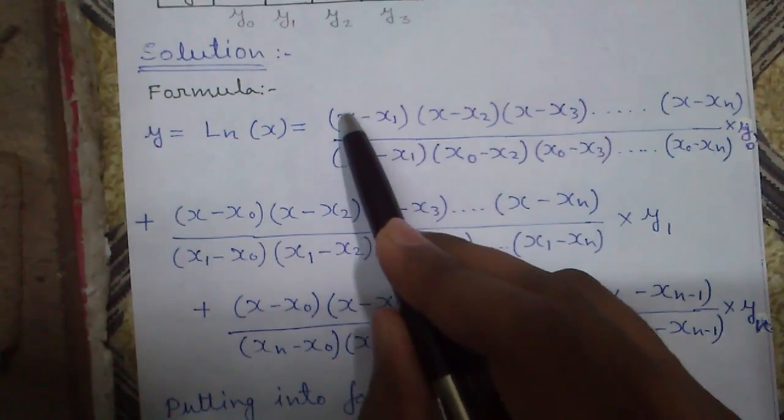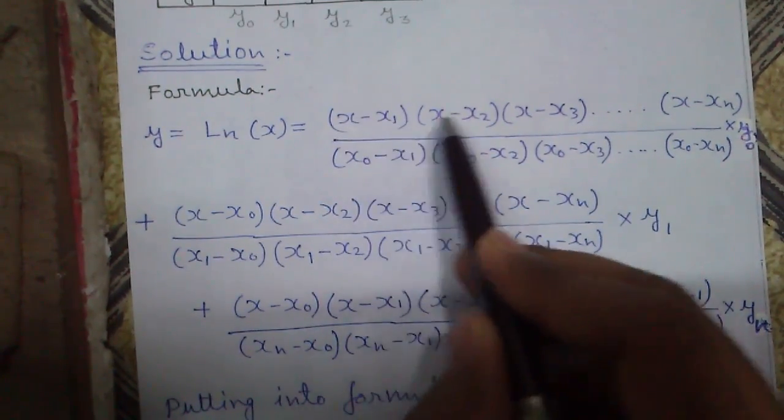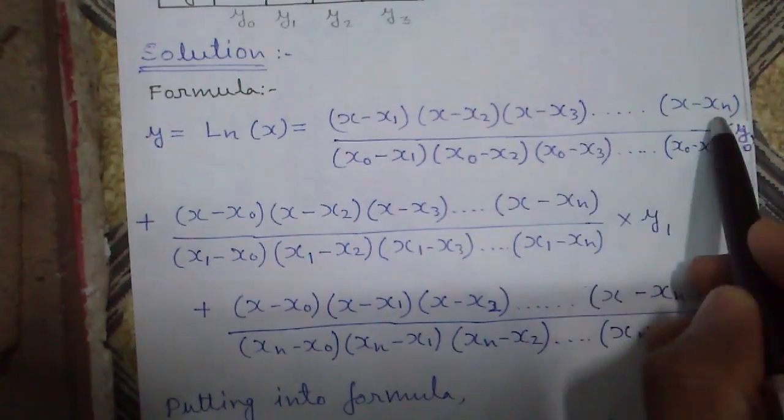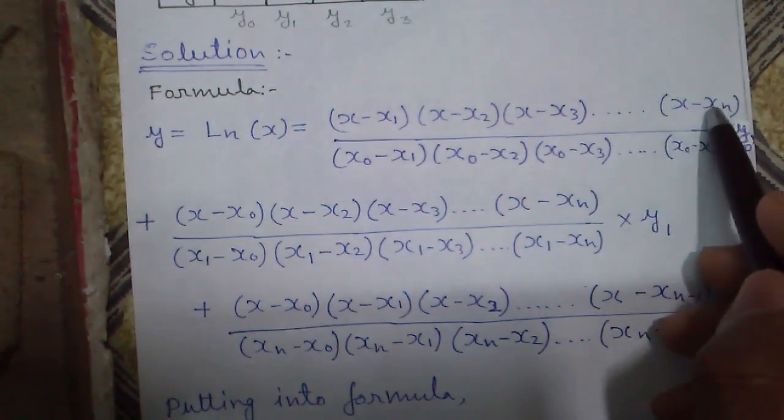In the numerator, we will subtract each number from the x: x minus x1, x2, x3, x4 and so on. The last term will be x minus xn.